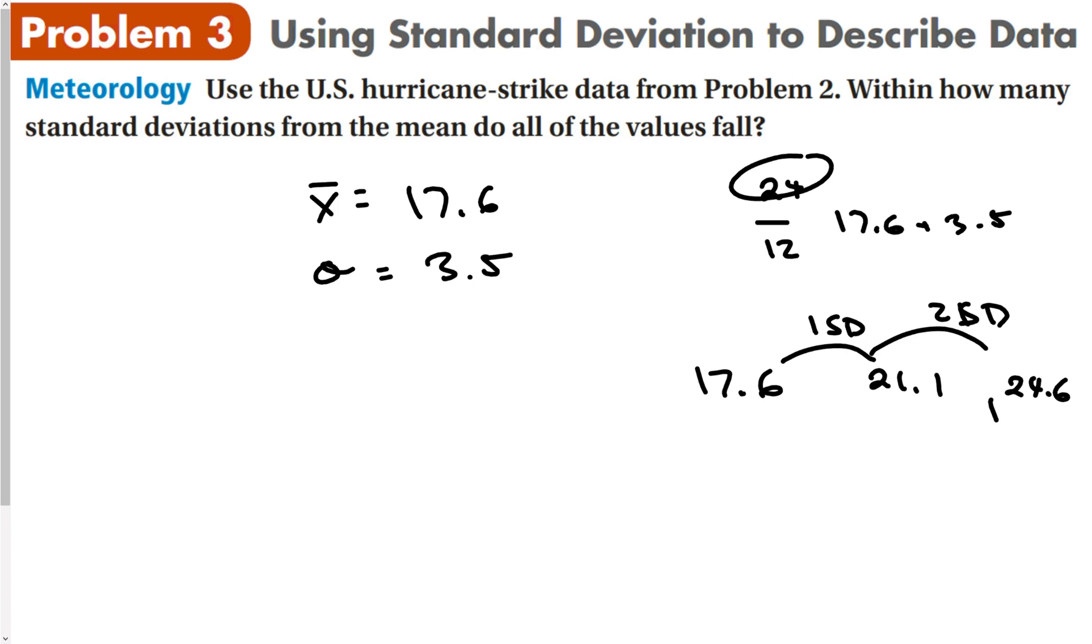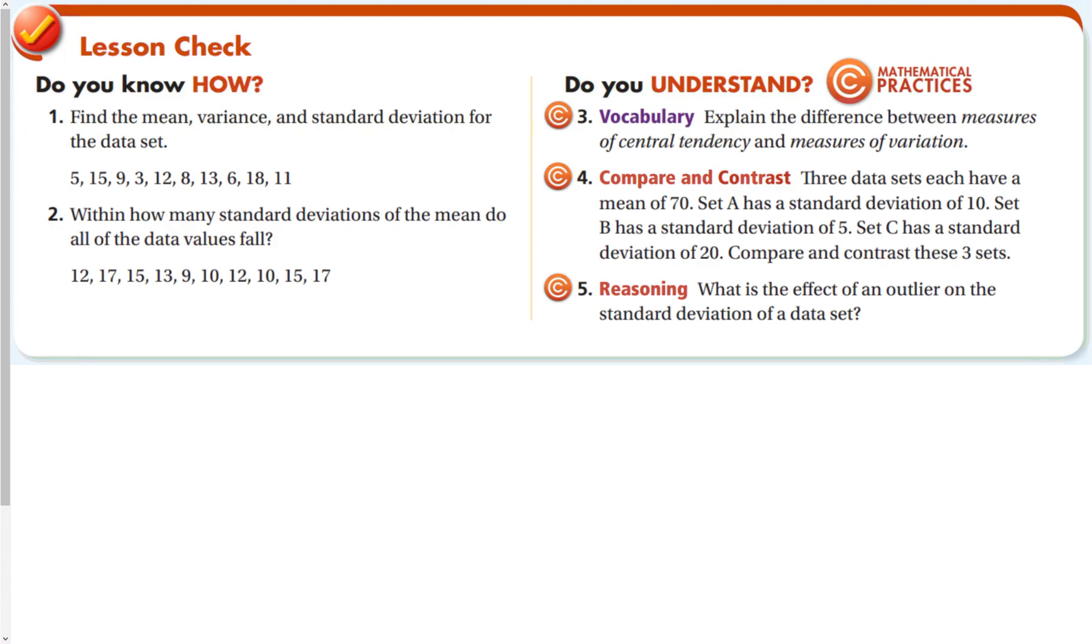Going the other way, 17.6 minus 3.5 is 14.1. Minus 3.5 again gives 10.6. So this is one standard deviation and that's two standard deviations. All of the data in this particular problem is within two standard deviations of the mean. You get that just by finding the mean and adding and subtracting.